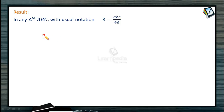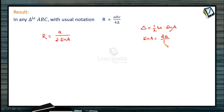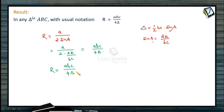Let us see the derivation of R = abc / 4Δ. We have R = a / 2sinA. Now the formula for the area of a triangle is Δ = (1/2) · BC · sinA = (1/2) · a · sinA, so sinA = 2Δ / a, giving sinA = 2Δ / BC. Replacing sinA in R = a / 2sinA, we get R = a / (2 · 2Δ/BC) = a / (2 · 2Δ/a) = a² / 4Δ... more precisely R = a / (2 · (2Δ/a)) = abc / 4Δ. So the circumradius equals the product of all three sides divided by 4Δ.